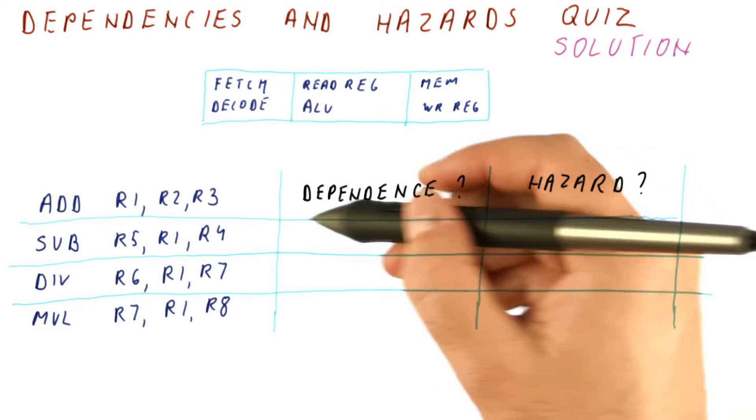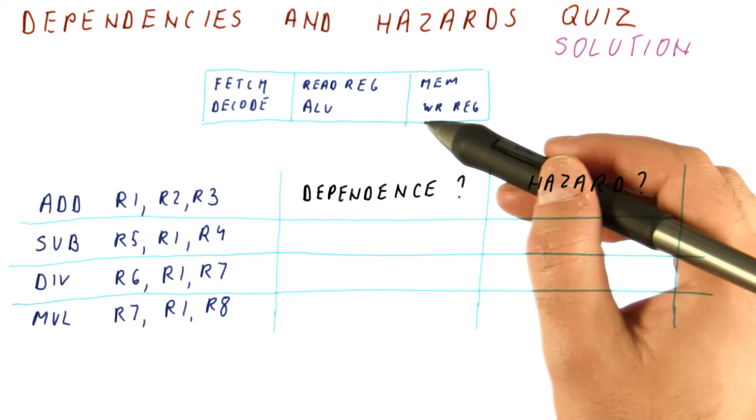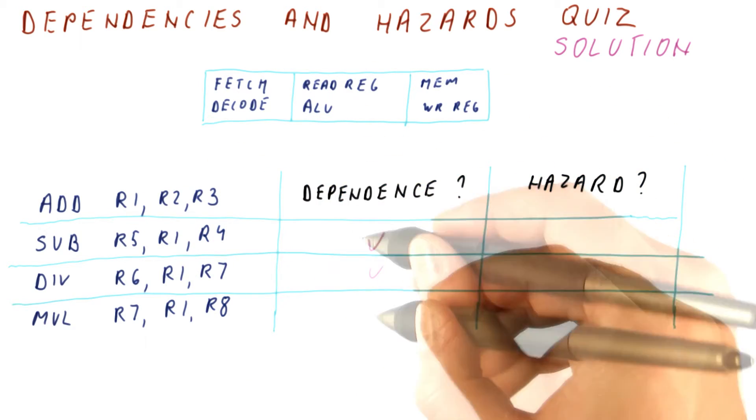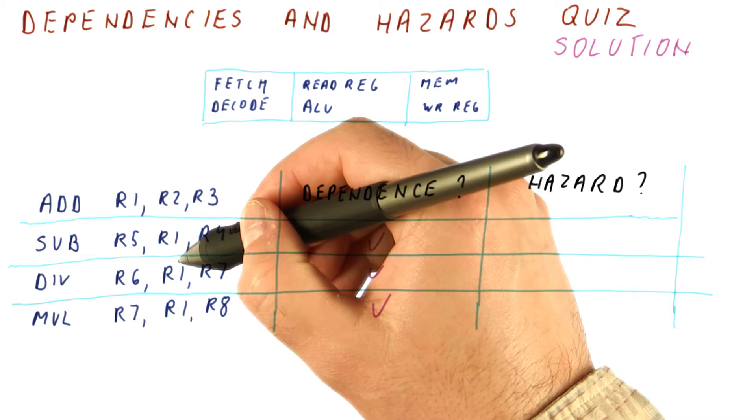Again, dependencies are a property of the program alone, so we don't have to worry about the pipeline yet. Each of these instructions has a dependence on R1 from the add to that instruction.